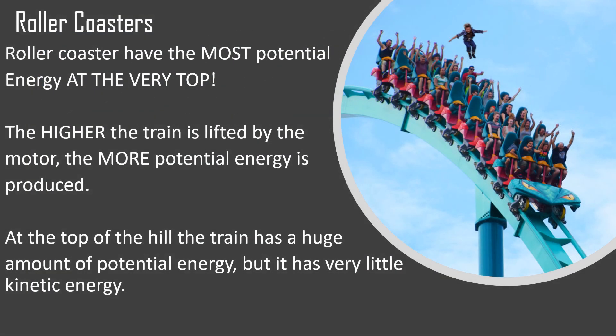There's a really good example of this in roller coasters. Roller coasters have the most potential energy at the very top. The higher the train is lifted by the motor, the more potential energy is produced — the bigger the hill, the higher it can go. At the top of the hill, the train has a huge amount of potential energy but very little kinetic energy, until it goes over that hill.